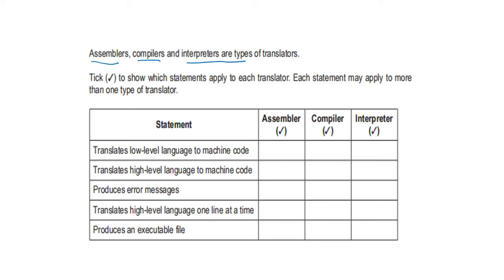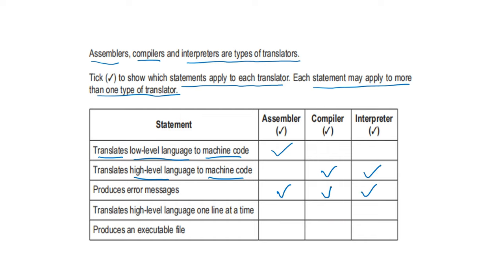Assemblers, compilers, and interpreters are types of translators. Tick which statements apply to each. Translates low level language to machine code — assembler (assembly language is low level). Translates high level language to machine code — compiler and interpreter (e.g. Python). Produces error messages — all three translators. Translates high level language one line at a time — interpreter. Produces an executable file — compiler and assembler.